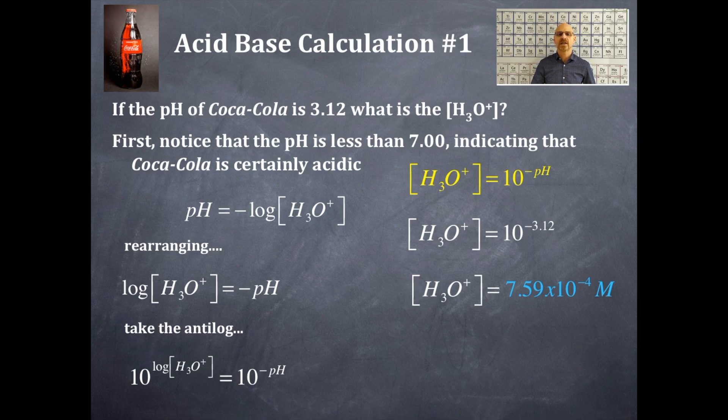The 12 is two decimal places. And all hydronium ion concentrations or hydroxide ion concentrations are typically going to be three significant figures here.